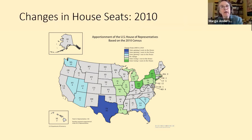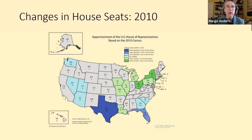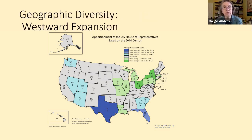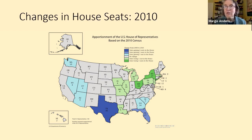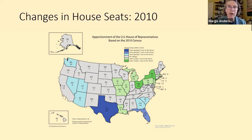After 2010, the blue areas gained political representation and the others lost seats. The Northeast and Midwest are the slow-growing regions now — they weren't a hundred years ago. The South and West are by and large still growing.